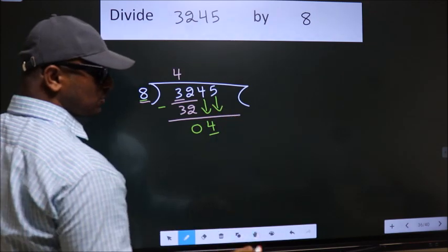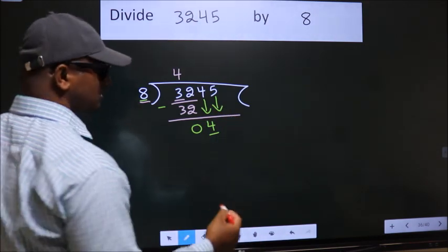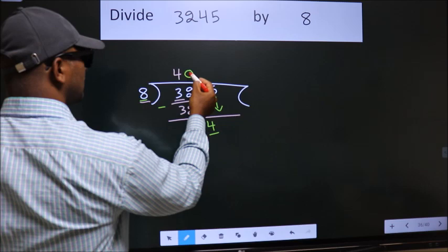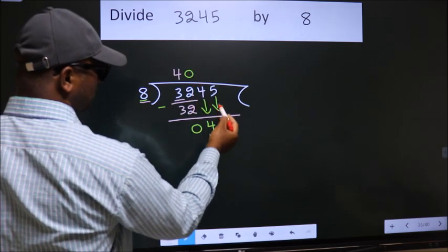And the rule to bring down the second number is: put 0 here, then only we can bring down this number.